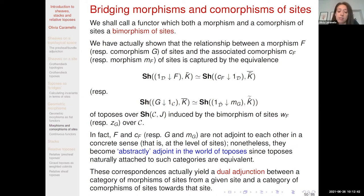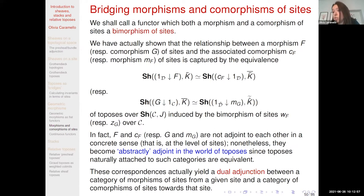From these bridges one can actually derive a dual adjunction between a category of morphisms of sites from a given site and a category of comorphisms of sites towards that site. The details of this can be found in the monograph draft which I put on arXiv last year.